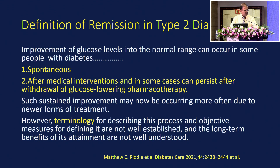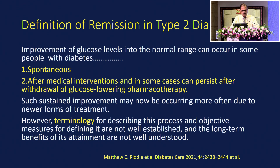What is the definition of remission in type 2 diabetes? It's improvement of glucose levels — a normal change that can occur in some people with diabetes when you start treating them. It can sometimes be spontaneous regression, but most of the time it follows medical interventions, and in some cases can persist after withdrawal of anti-diabetic agents. Such sustained improvement may be occurring more often now because we have more efficient drugs. However, the terminology for describing this process and objective measures for defining it are not well established, and the long-term benefits of remission are not well understood.